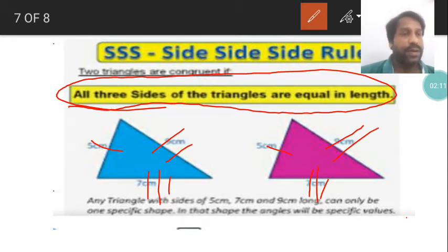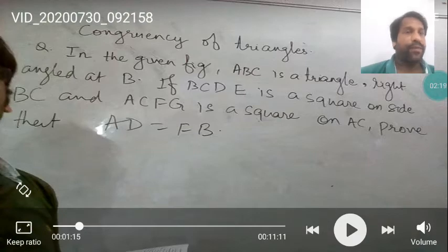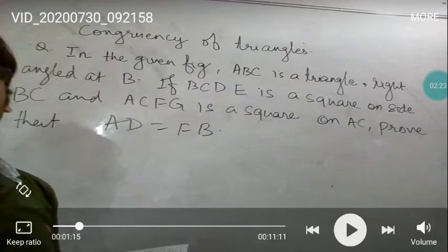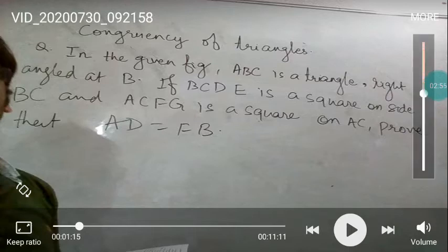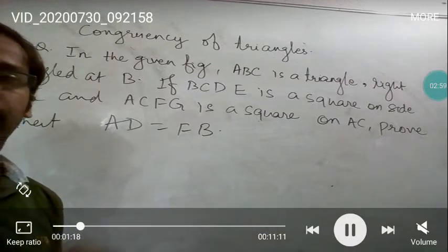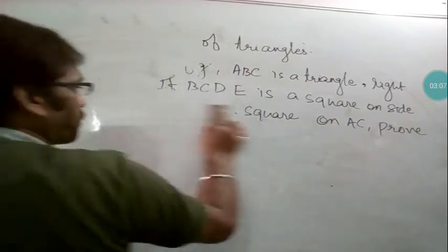I have made one video — just see that, I'll explain something important there too. Now here is one question I have prepared for you. Read the question yourself once. The question says: ABC is a triangle, right angle at B. BCDE is a square. AC FG is also a square on AC. Prove that AD is equal to FB.